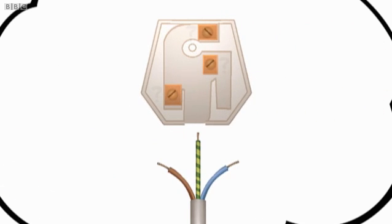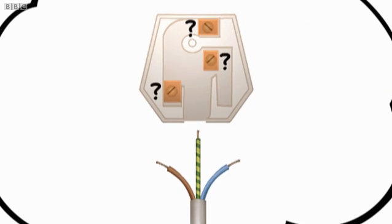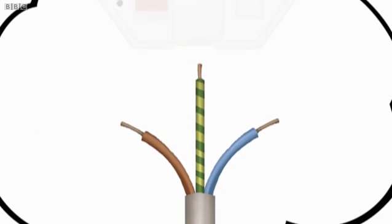Here's how to remember where those wires go. UK plugs have either two or three wires going into them. Sometimes this one's missing.